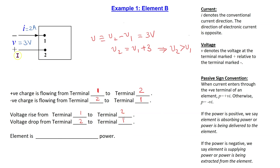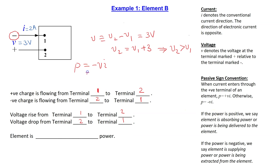Applying passive sign convention to this ideal basic circuit element, we can see that the conventional current I is entering the terminal marked minus. Thus, we write the power formula with a minus sign. We use minus VI. Substituting values, we get minus 3 times 2, which is equal to minus 6 watts. Since the final answer is negative, the element is supplying power.